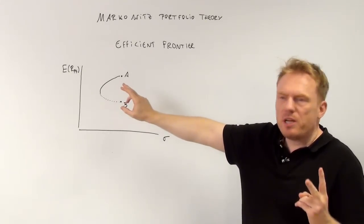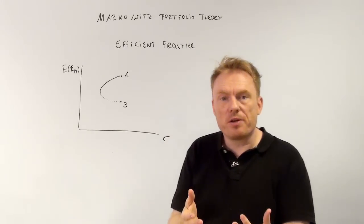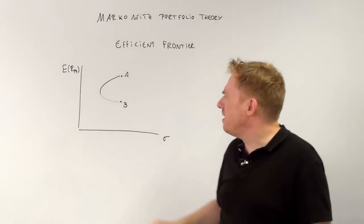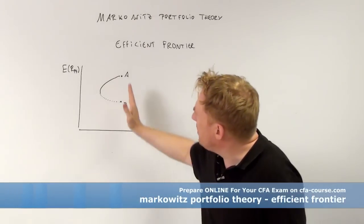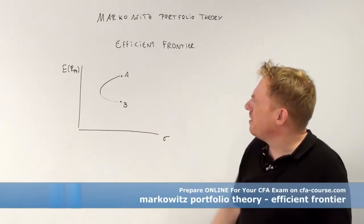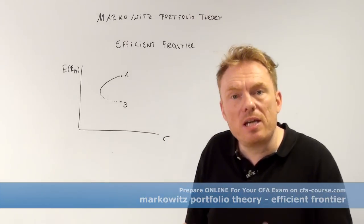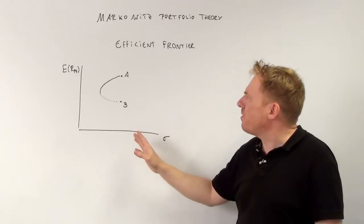Say we have two different shares, share A and share B, with an expected return. Share A has an expected return, share B has one as well of course, and there are two different standard deviations. They don't need to be equal to one another.